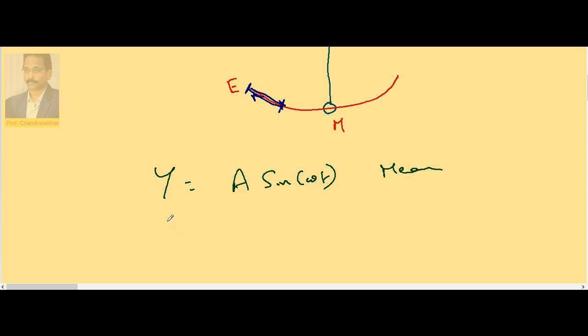If the same pendulum starts from extreme, this is sin(ωt + π/2). Because mean to extreme, the phase difference is π/2 from here to here, π/2. Again, π/2 goes to π/2 and then comes back π/2.